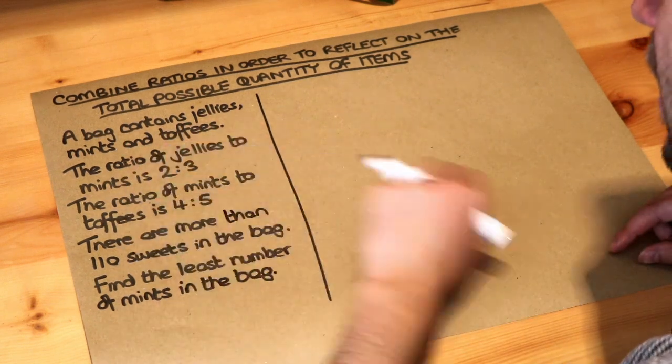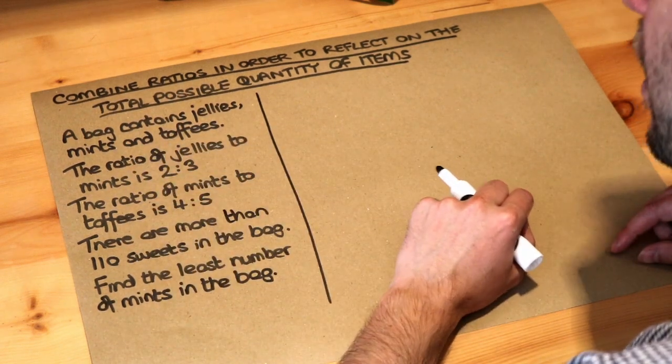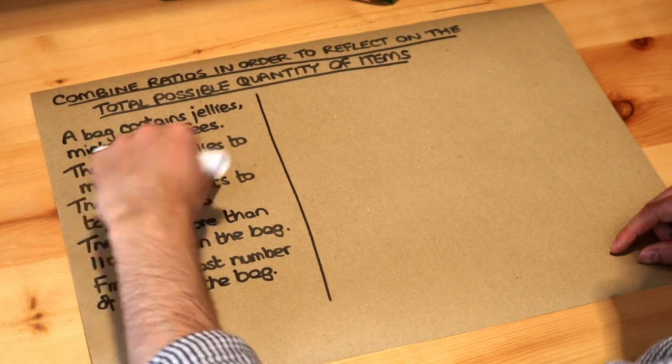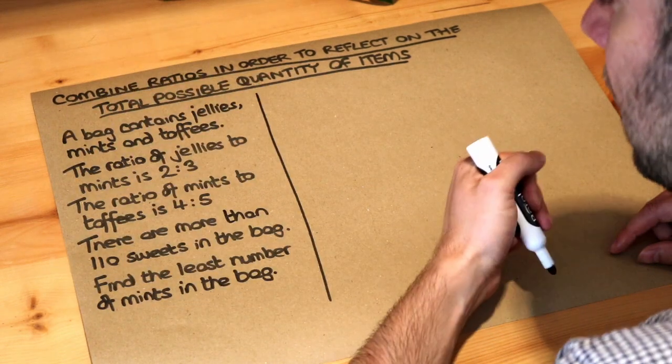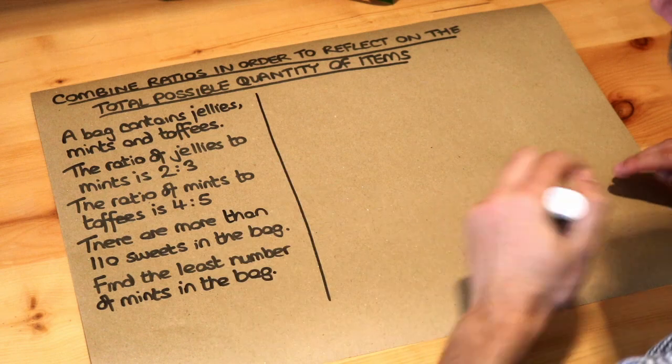Now both these ratios here involve mints so we can combine these ratios into one just like we have in the previous videos on this skill in order to reason about it.